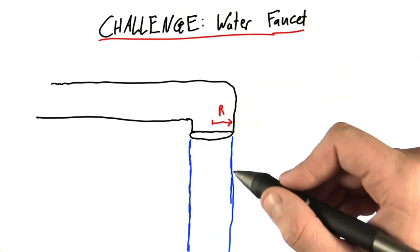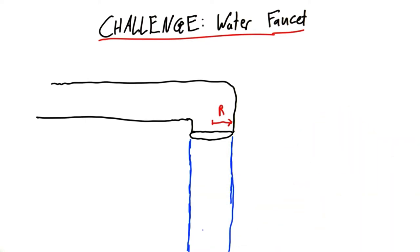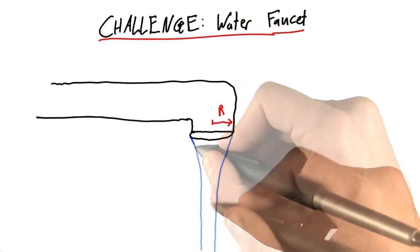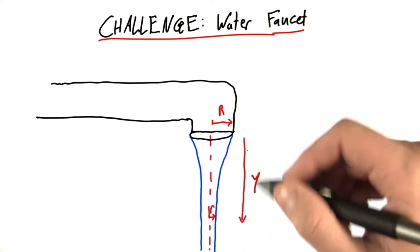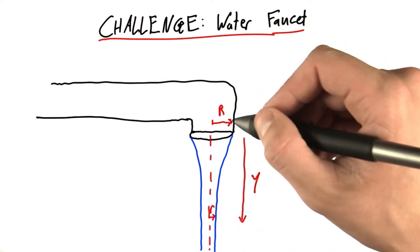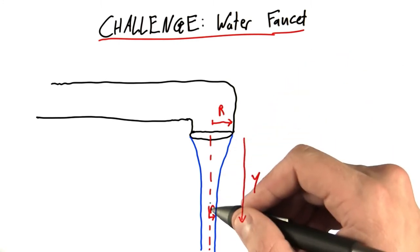You'll notice that it doesn't look like this, as you might expect. In reality, the water tapers off. It gets thinner and thinner as it falls. So after it's fallen a distance y, the initial radius, big R, has reduced to this small r.